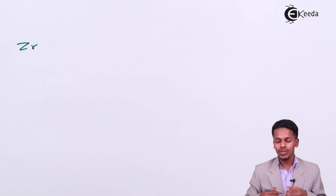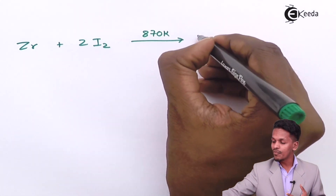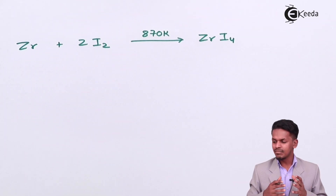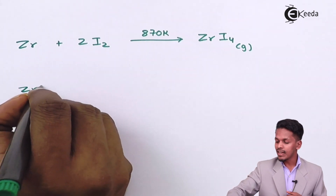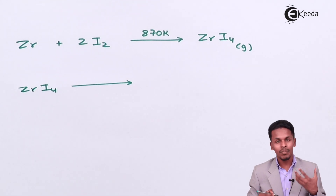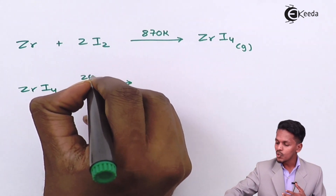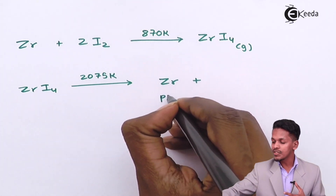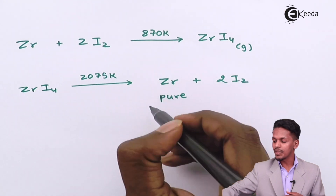Similarly, for zirconium: impure zirconium is treated with 2 moles of iodine at a temperature of 870 Kelvin, forming the volatile compound ZrI₄ — tetraiodo zirconium — in the gaseous phase. This is collected on a tungsten filament. By increasing the flow of electricity, the temperature is raised to 2075 Kelvin, causing zirconium to deposit on the tungsten filament as pure zirconium, while I₂ remains in the vapor phase.